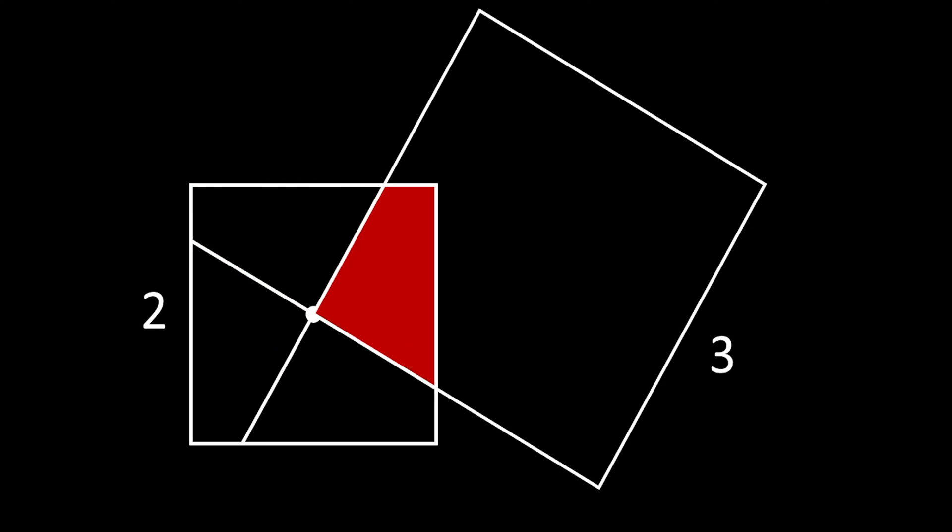So that means that this red shaded area must be equal to one fourth of the area of our smaller square. But is there an explanation for this? Well, actually, yes.